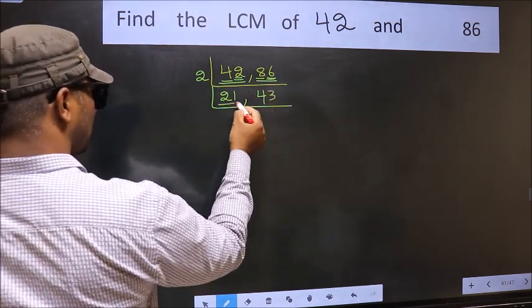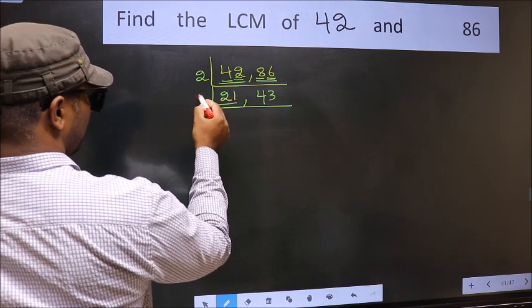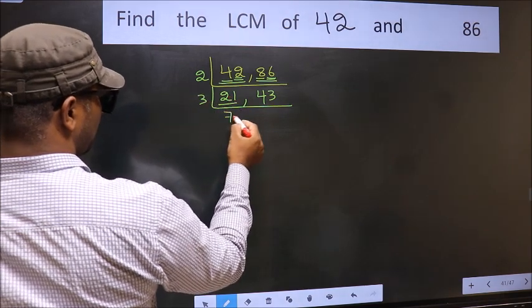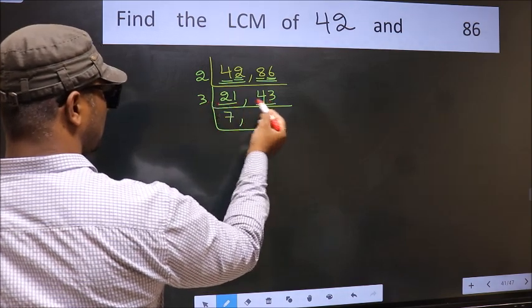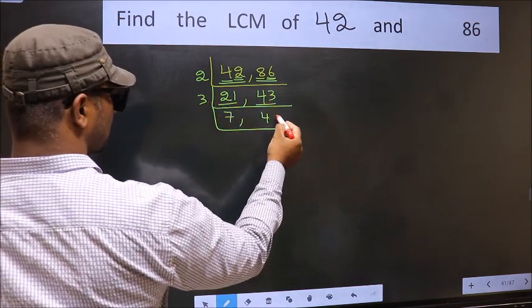Now here we have 21. 21 is 3 sevens, 21. The other number 43, not divisible by 3, so we write it down as it is.